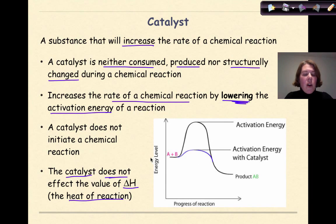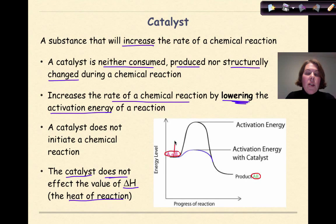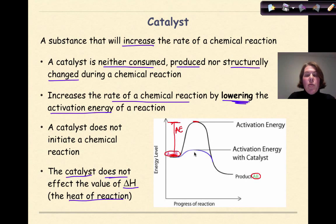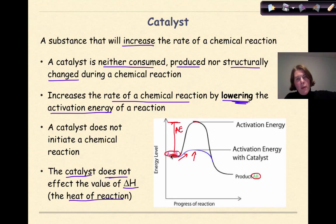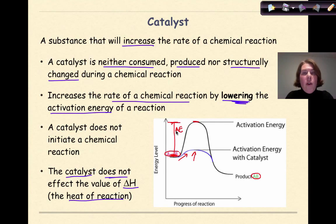The activation energy going from reactants A plus B to products AB is the amount of energy needed to go from the potential energy of the reactants to the top of the activated complex. What a catalyst does, as shown by the blue line, is it lowers that activation energy. There will still be some activation energy — it will still go from a flat line where you start with reactants, up and then down — but the overall amount of activation energy will be lowered by the presence of a catalyst.